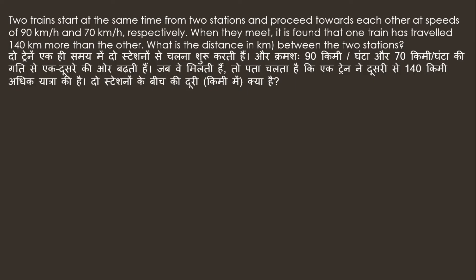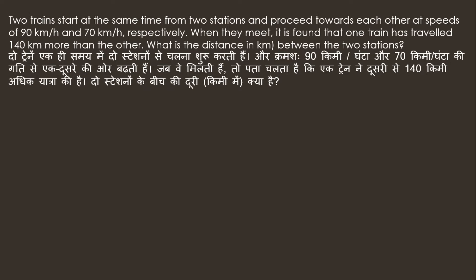The question is: Two trains start at the same time from two stations and proceed towards each other at speeds of 90 km per hour and 70 km per hour. When they meet, it is found that one train has travelled 140 km more than the other. What is the distance between the two stations?